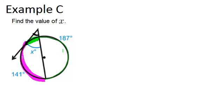using our knowledge that the whole circle is 360 degrees. We already know the rest of the circle is 187 plus 141. So to figure out that missing arc,